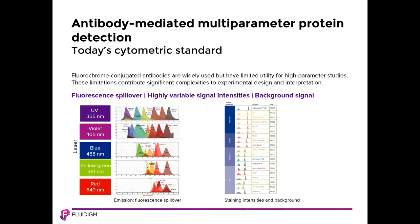The use of fluorescence is still considered a cytometric standard. Fluorochrome-conjugated antibodies are widely used, but they have limited utility for high-parameter studies. There is often signal overlap and other challenges, including highly variable staining intensities, background signal, and autofluorescence. These create limitations that impart significant complexities to experimental design and interpretation. Because of this, traditional fluorescence is currently limited in terms of routine use to around 18 to 20 parameters at a maximum.